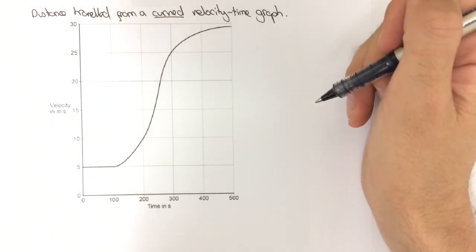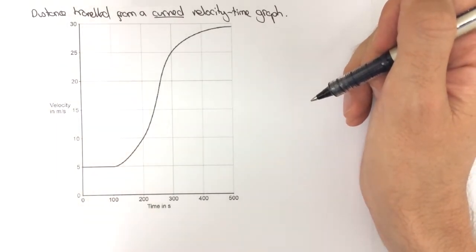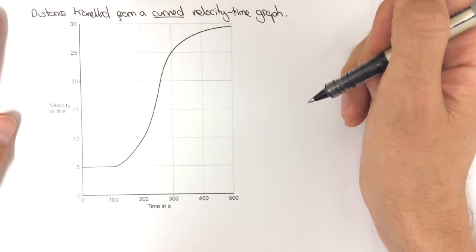So in this video we're going to look at how to find distance travelled from a curved velocity time graph. Now if you remember in the previous video we looked at finding distance travelled from a velocity time graph and saw that that was given by the area under the graph.